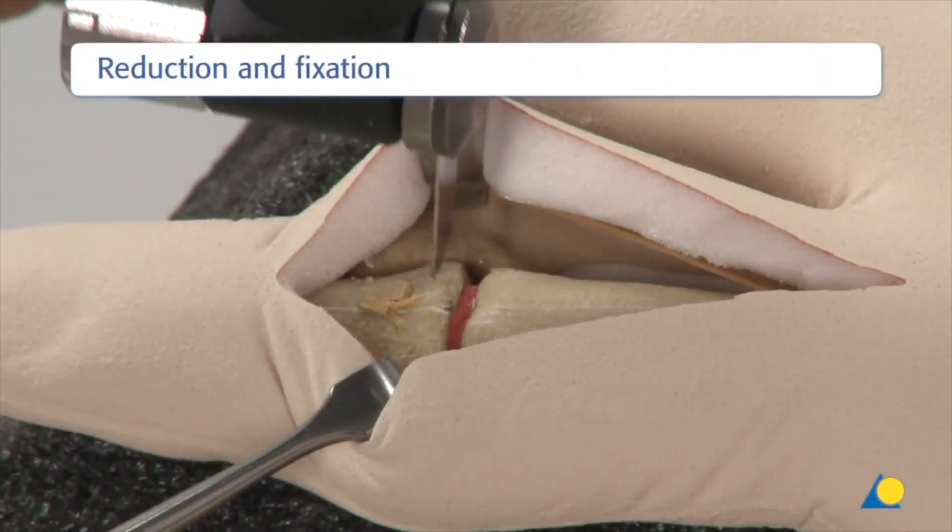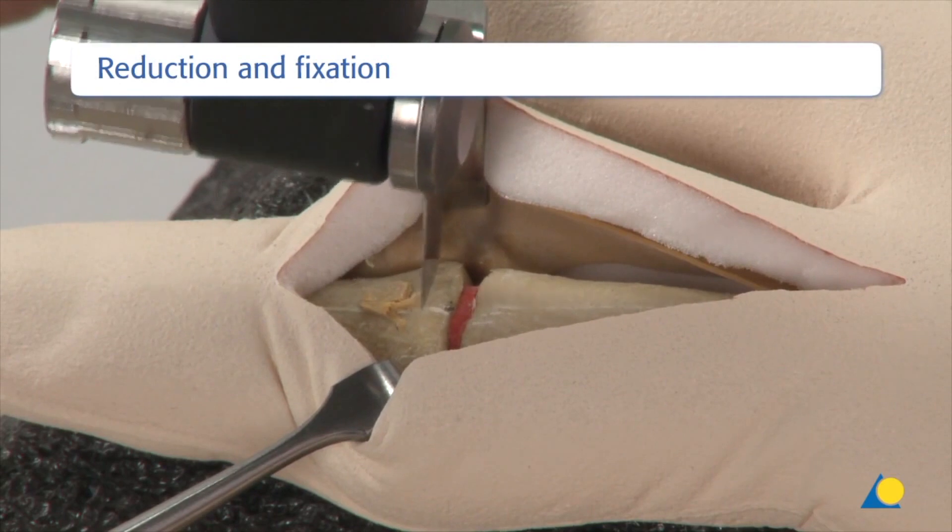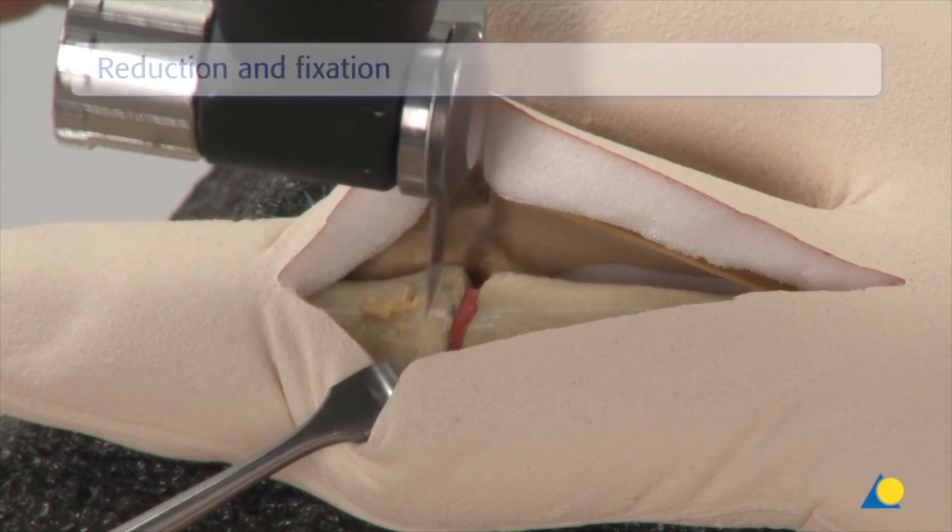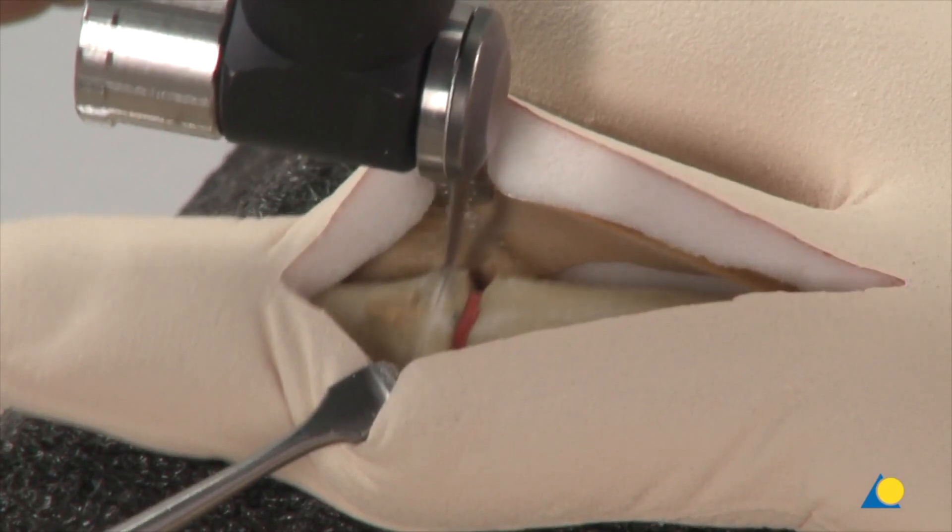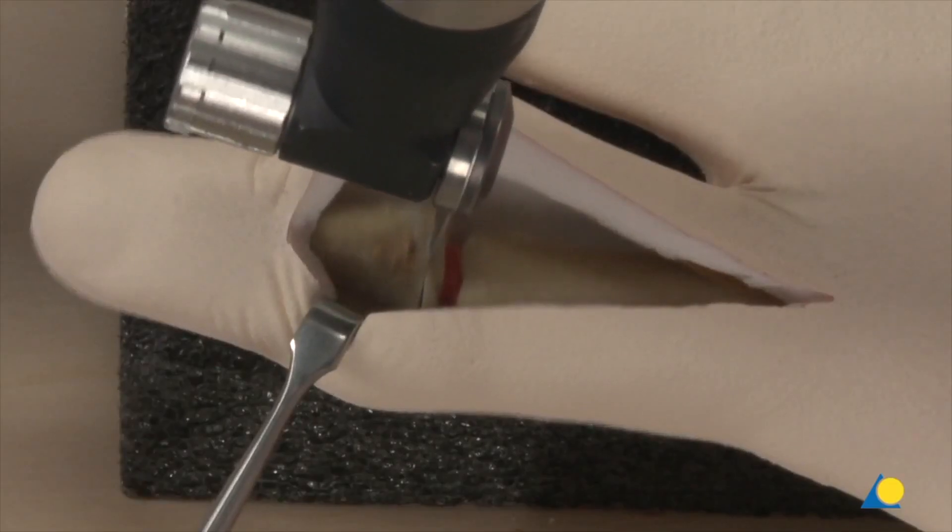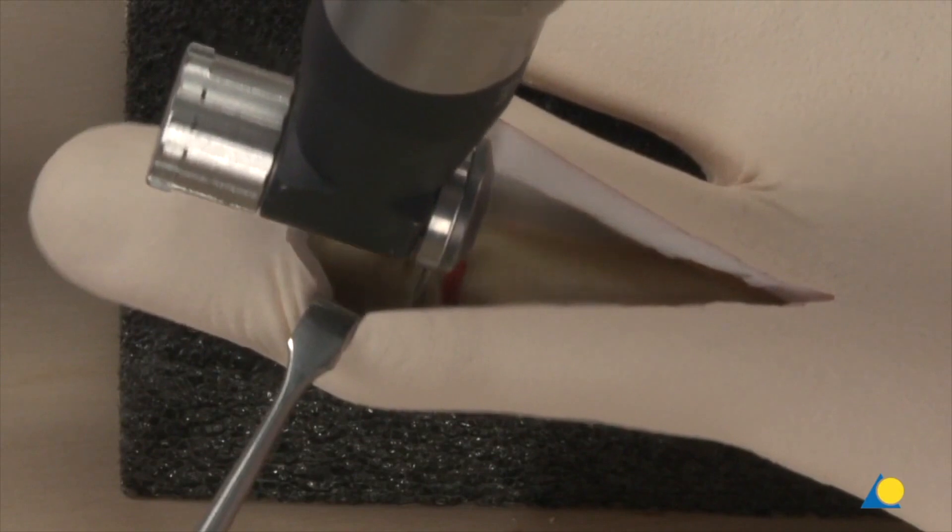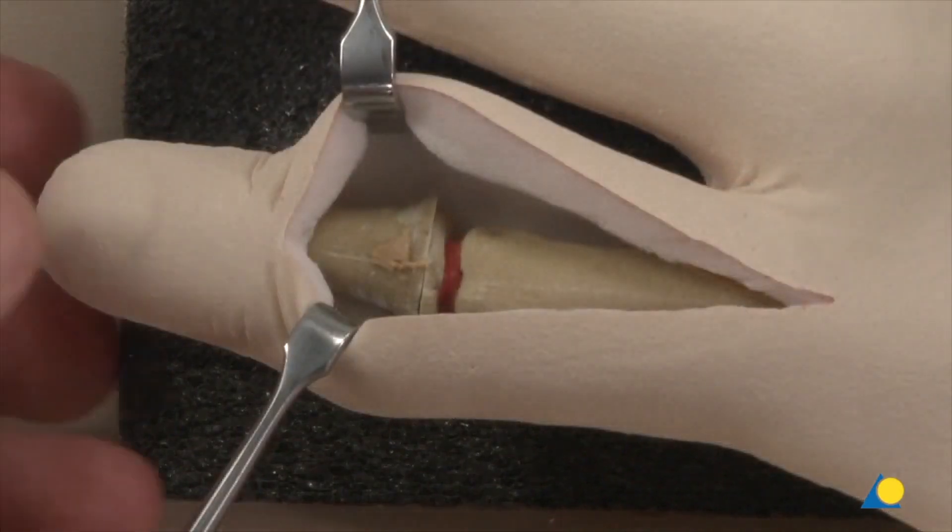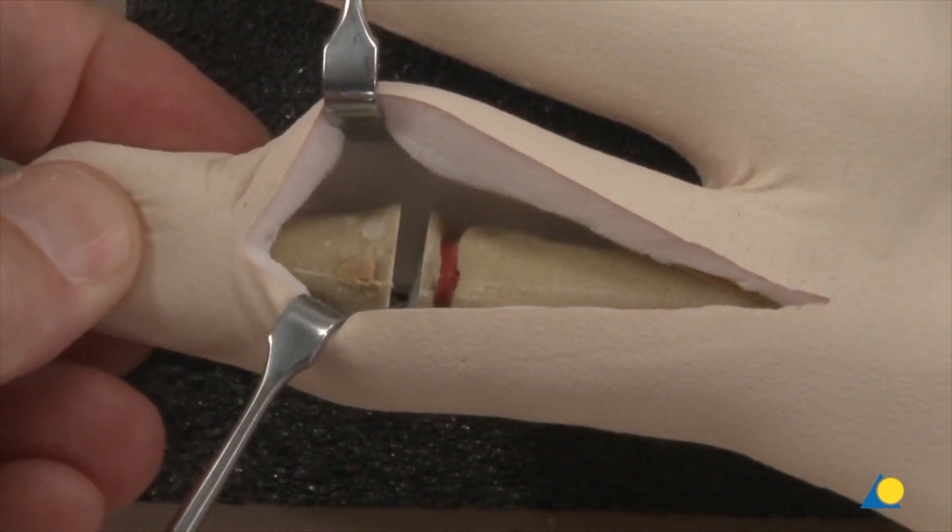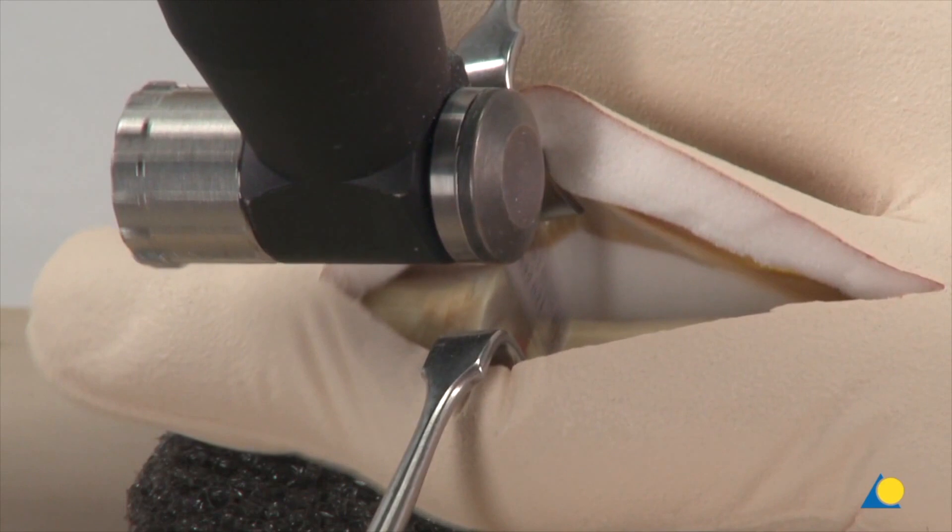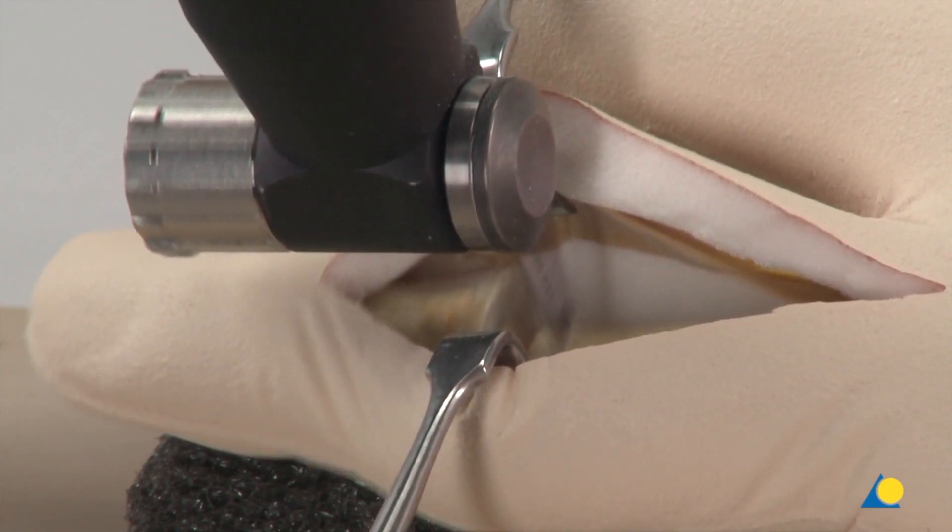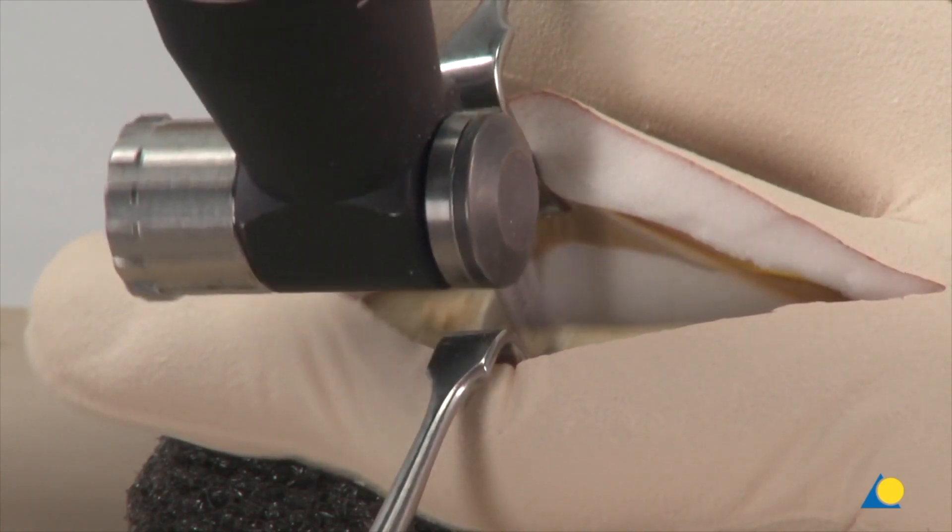With the oscillating saw, the osteotomy has begun perpendicular to the longitudinal axis of the middle phalanx. Both the remaining cartilage, as well as the subchondral bone, must be removed in order to obtain a flat cancellous bone surface. However, to prevent excessive shortening of the finger, only as much bone as necessary should be removed. The osteotomy is completed through the head of the proximal phalanx at the chosen angle for arthrodesis.